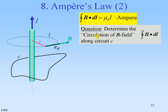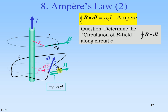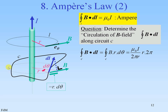Ampere's law continued. Now we relax the shape of the circuit, as seen here — circuit C. The question is: determine the circulation of the B-field along that circuit. Here is dl at a certain point, and what we need is the projection of dl on B in this scalar product. The projection is this distance, and this distance is also given by r·d-theta, when we consider the underlying circle. When we integrate r·d-theta over the whole circle, we end up with r times 2-pi. So again, the circulation of B·dl is mu0·i, although the curve has an odd shape.